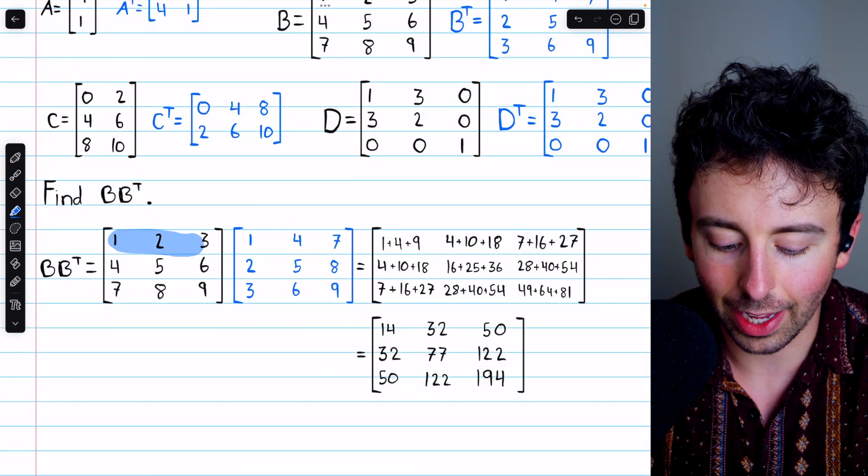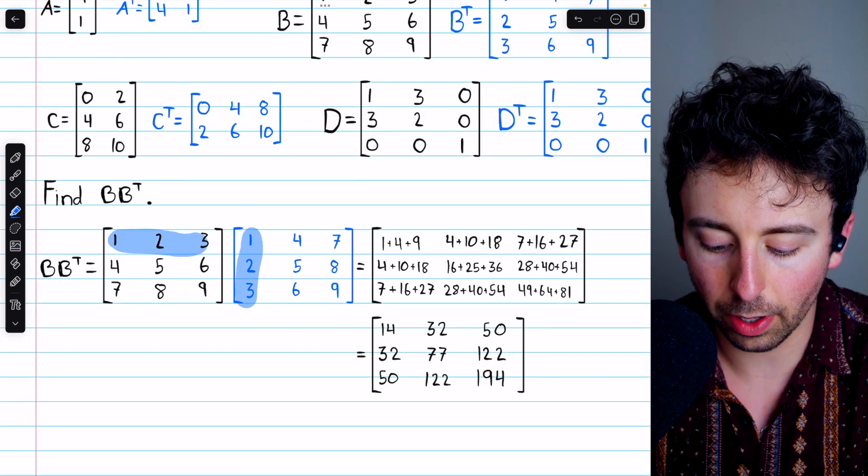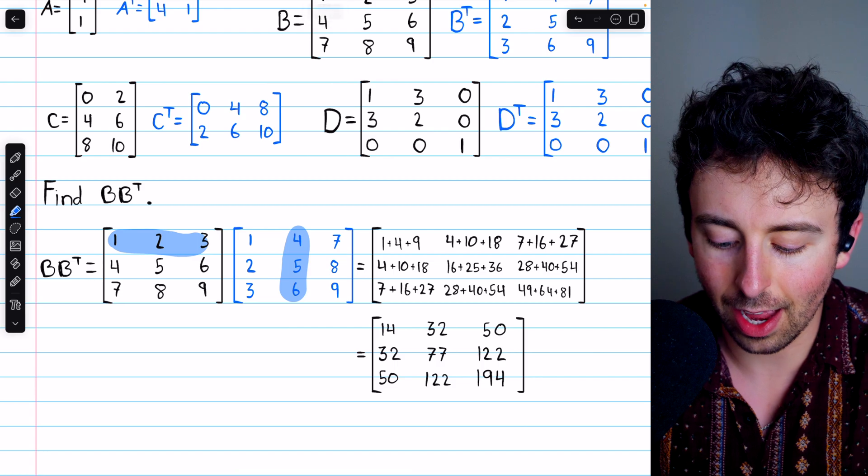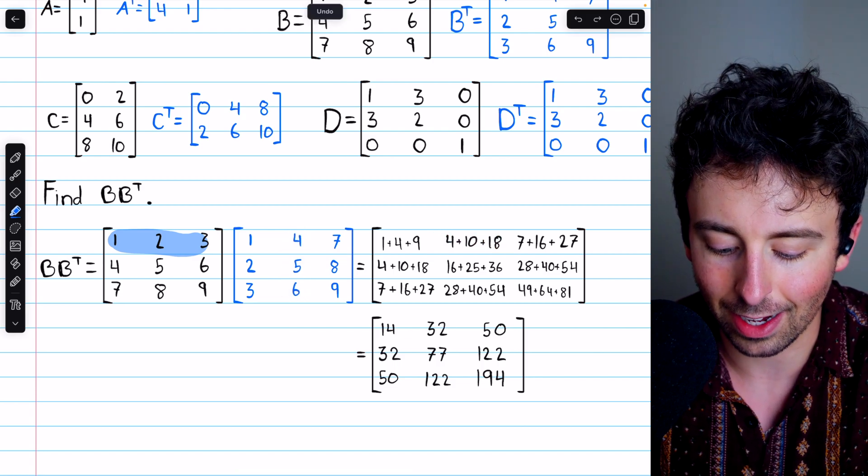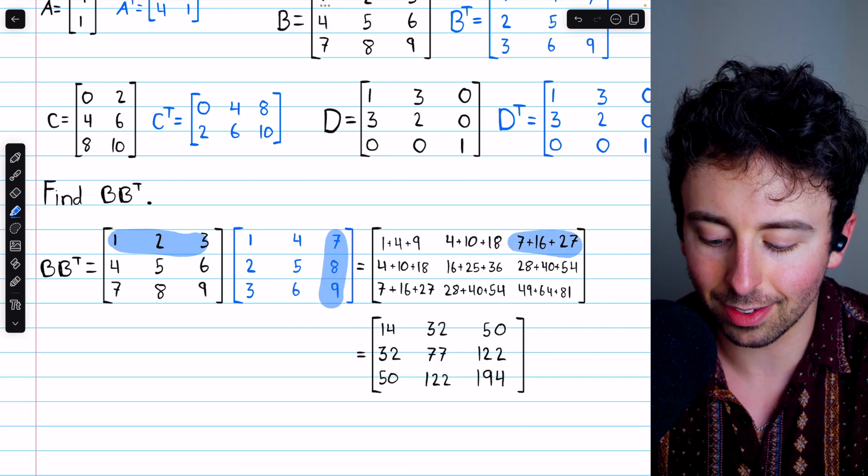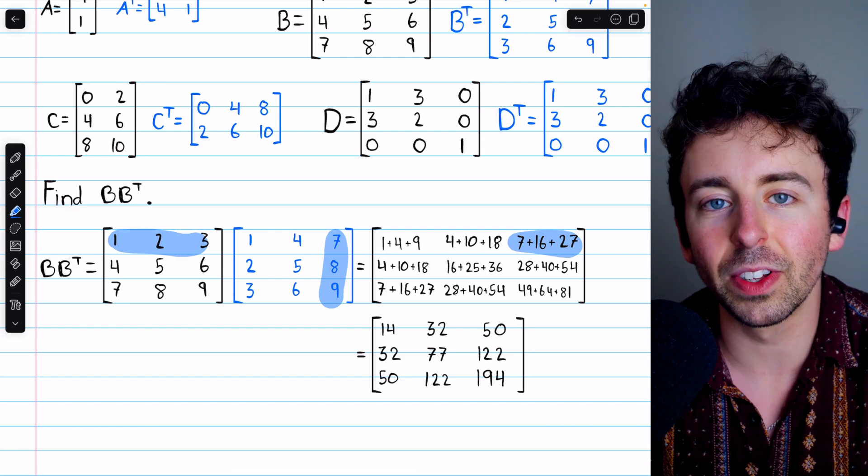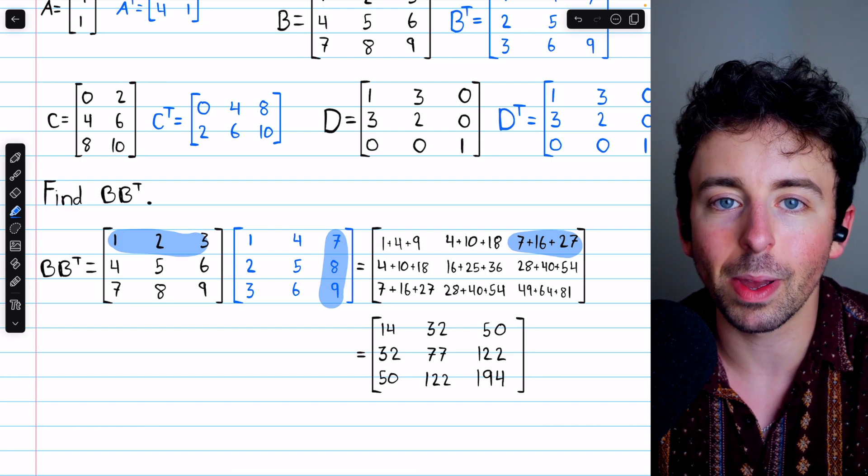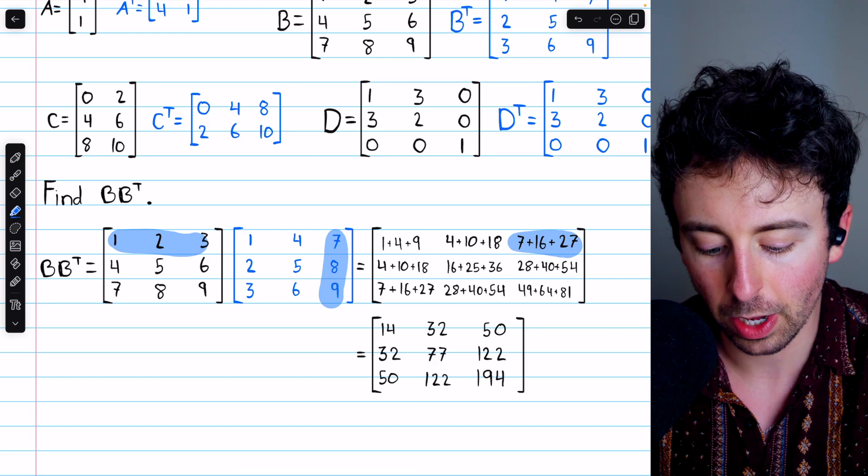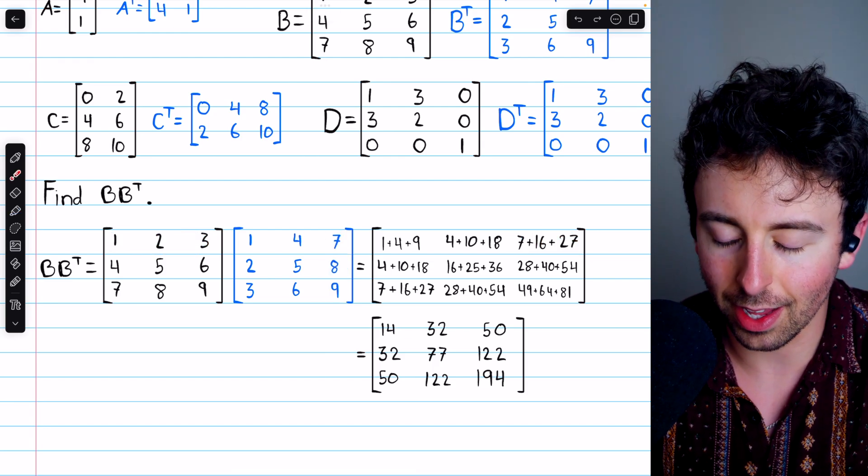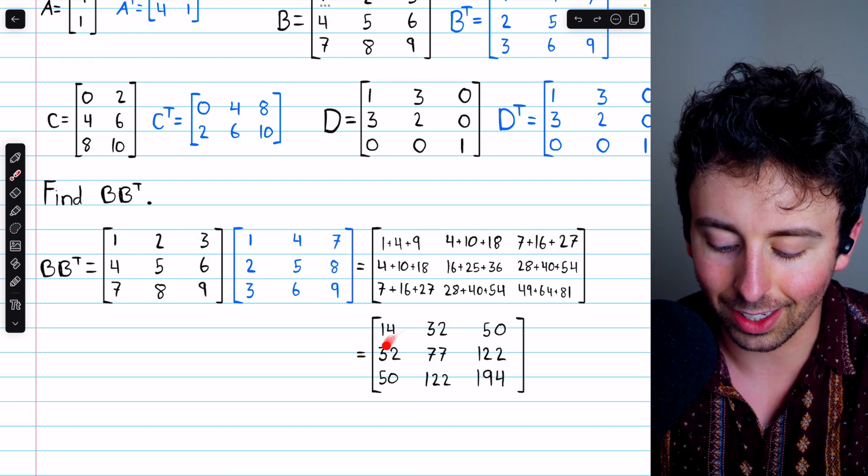It's a pain in the butt to calculate. We would first have 1 plus 4 plus 9, and then 4 plus 10 plus 18, and then 7 plus 16 plus 27, and so on. I'll leave a link in the description to my lesson introducing matrix multiplication if you need to review, but you can verify the result ends up being this.